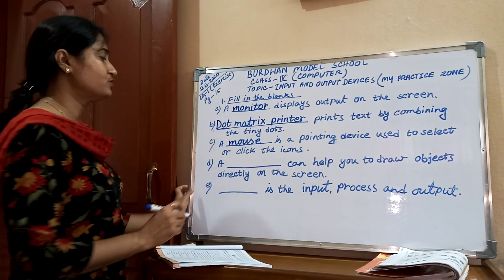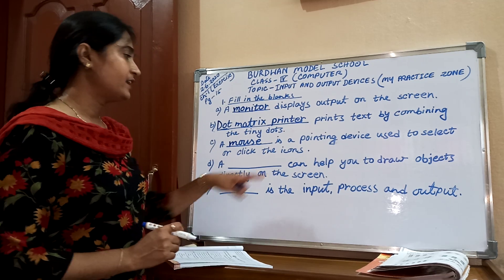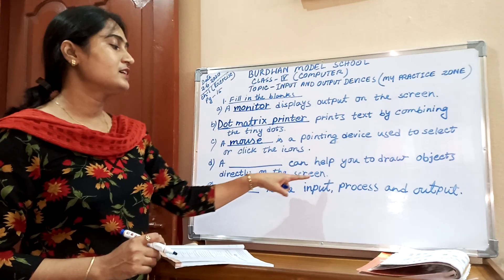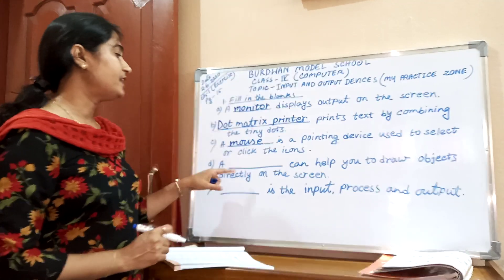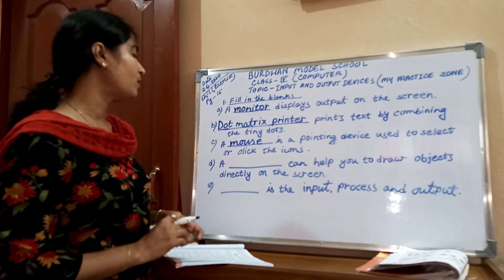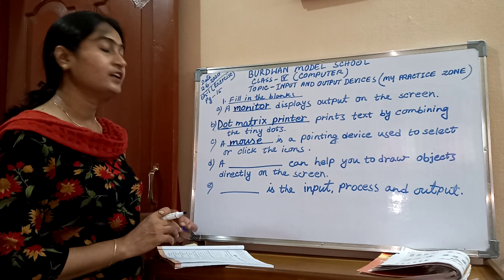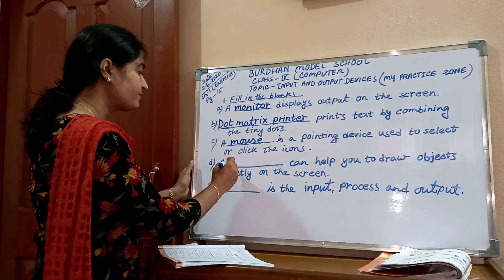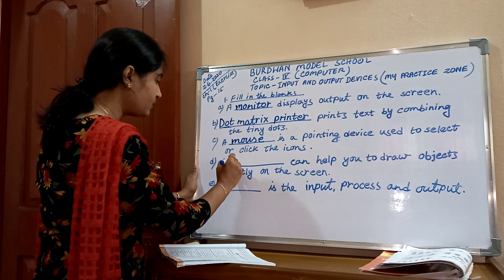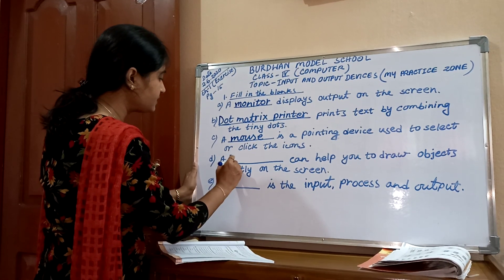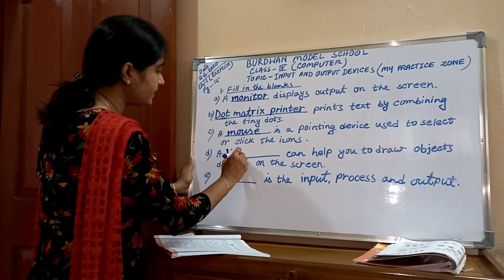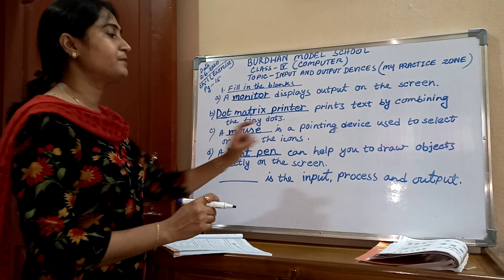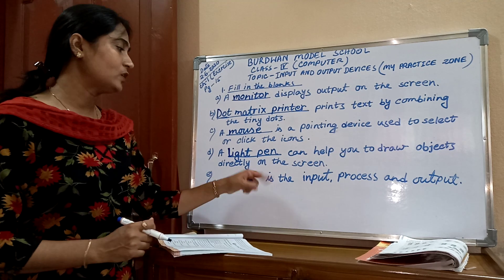A mouse. Number 1A: A dash can help you to draw objects directly on the screen. Which one? Light pen — that one we can use only on a special monitor. Write down over here: a light pen. A light pen can help you to draw objects directly on the screen.